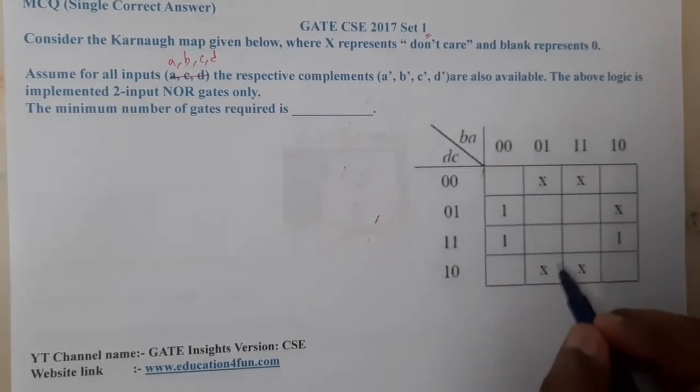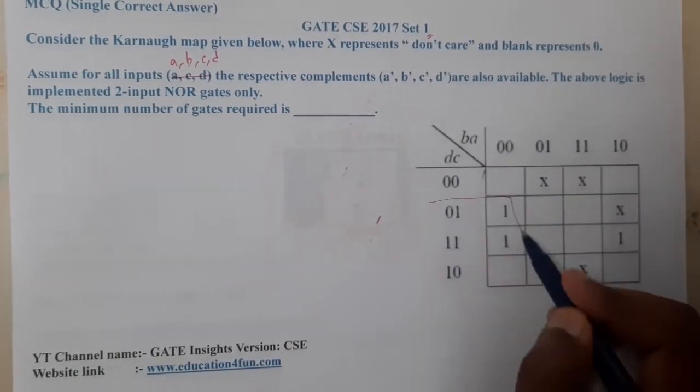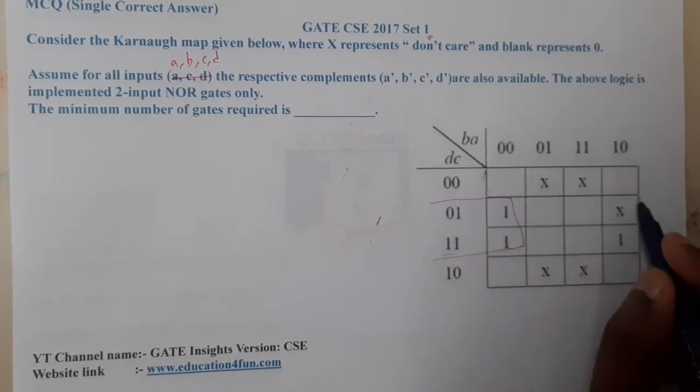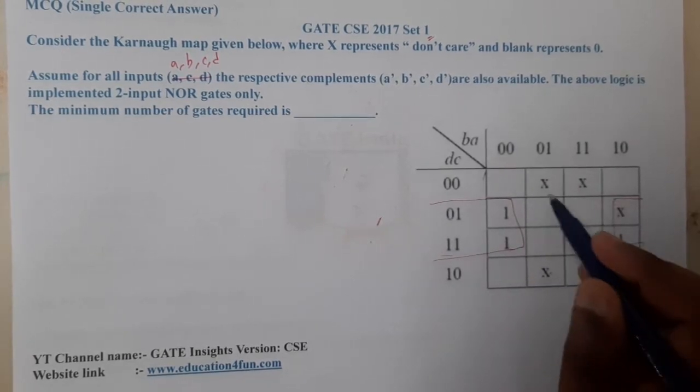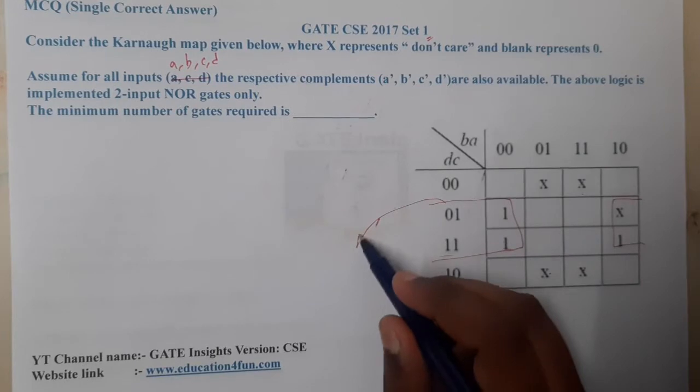this K-map has only three minterms, so you can take this as a pair of four items and you can avoid the don't cares. So what is this value?